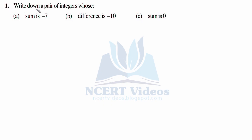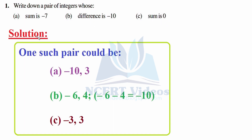Question 1: Write down a pair of integers whose (a) sum is minus 7. One such pair could be a = minus 10 and b = 3. When we add them, since signs are different we subtract and the sign comes from the bigger number, so subtraction leads to 7 and the sign comes from minus 10, giving minus 7.